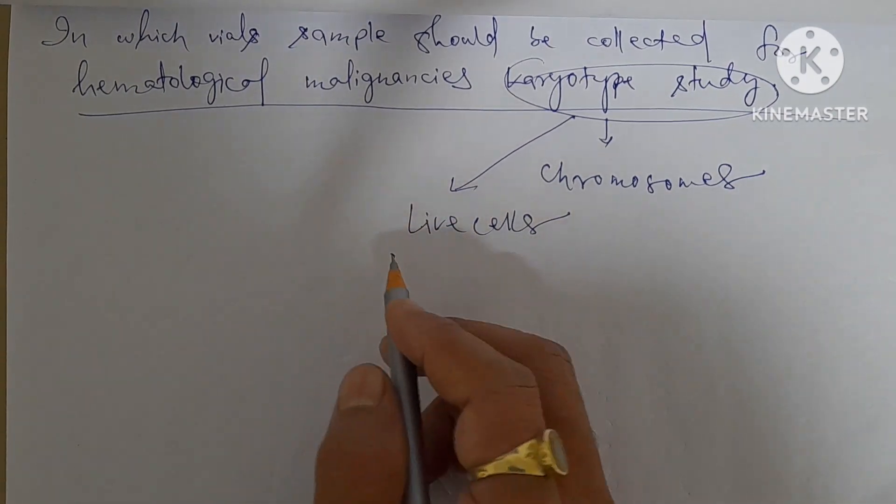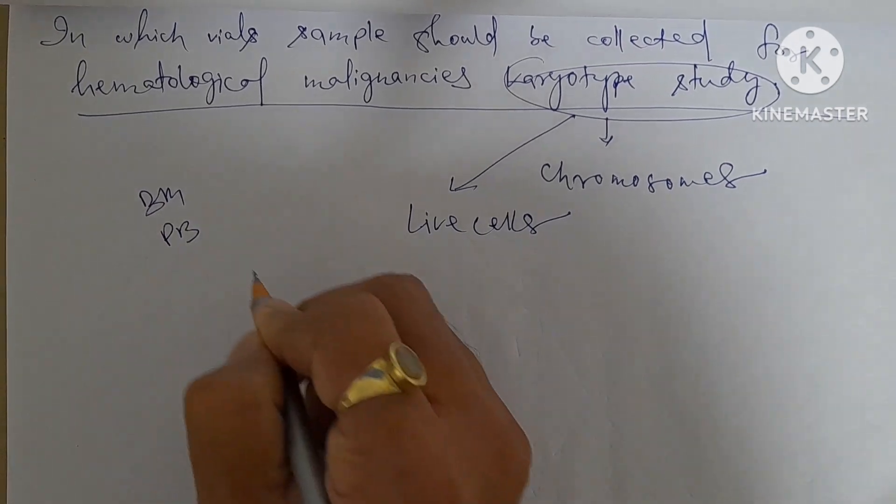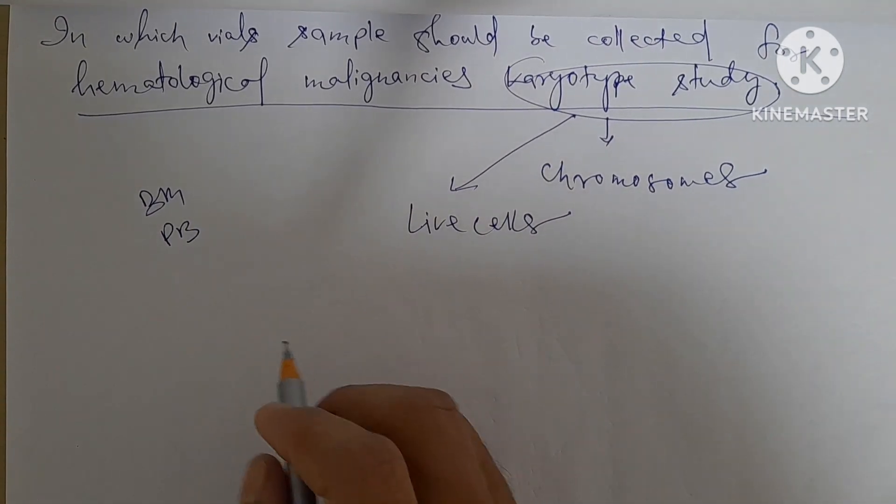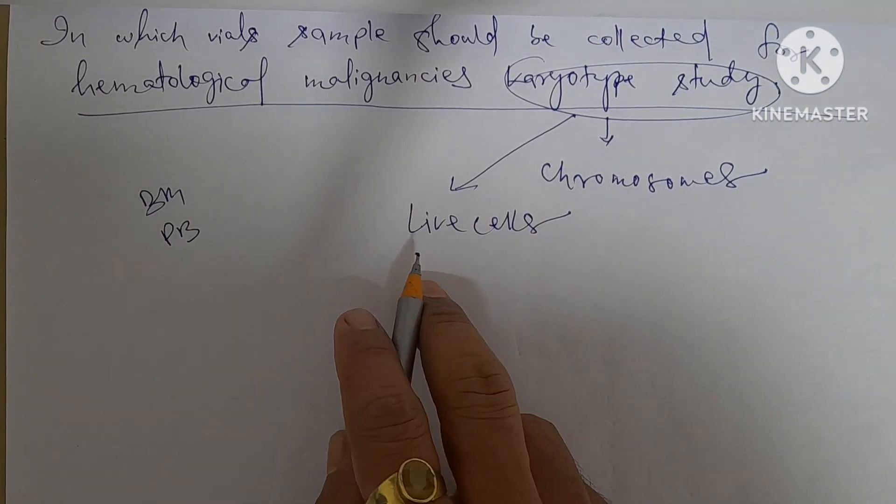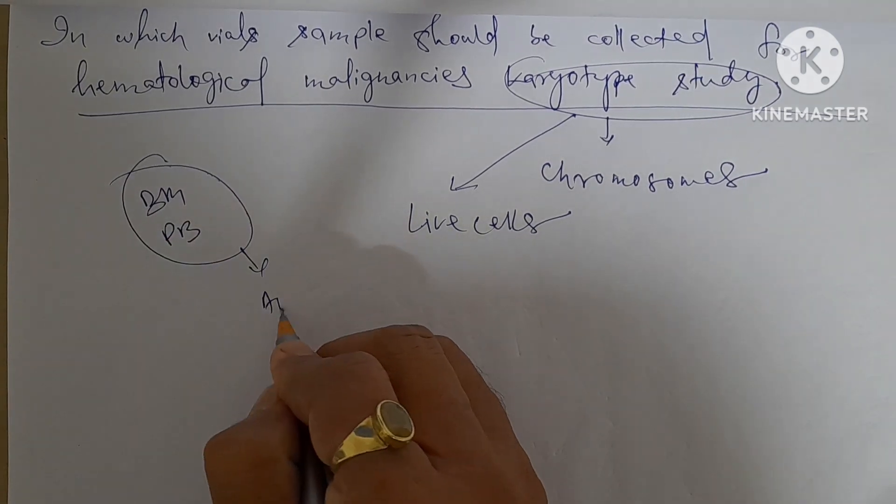In case of hematological malignancy, the samples are bone marrow and peripheral blood. And to get live cells, both samples should be collected in anticoagulant vials.